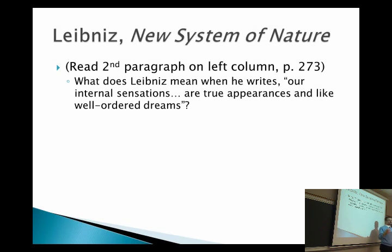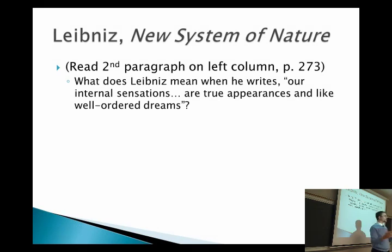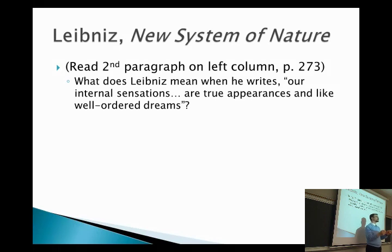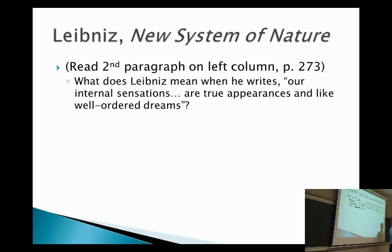He doesn't think there is a way to explain how mind can interact with body and vice versa. And he doesn't think that God is going to perform a miracle every time we need that interaction — that's too sloppy and inelegant. God would do better than that. So how do we fix the problem? We set it so that mind and body don't causally interact with one another, but they are perfectly timed in synchronization such that they don't interact, but they behave just like they do.